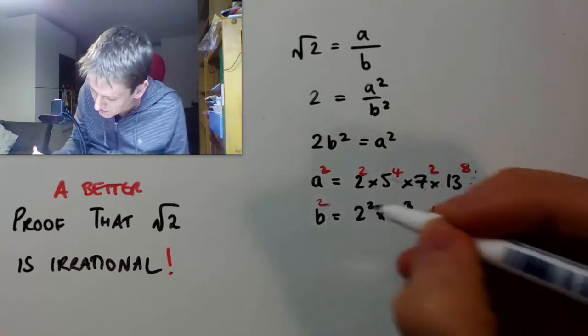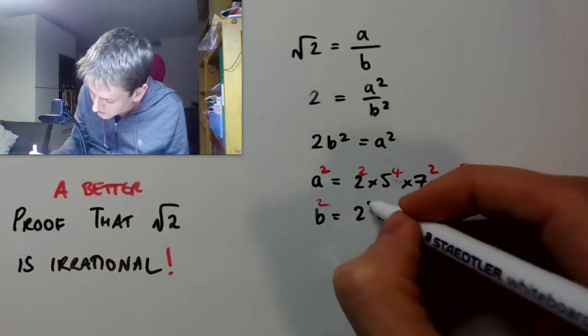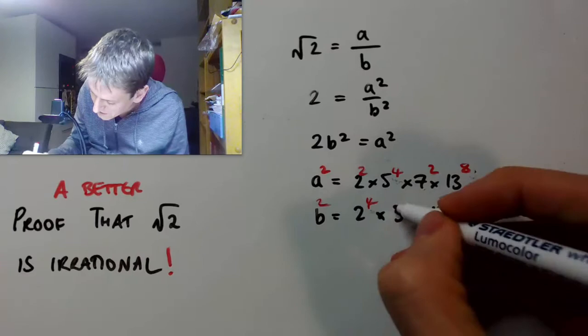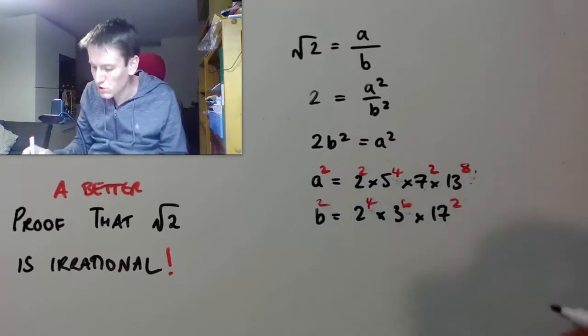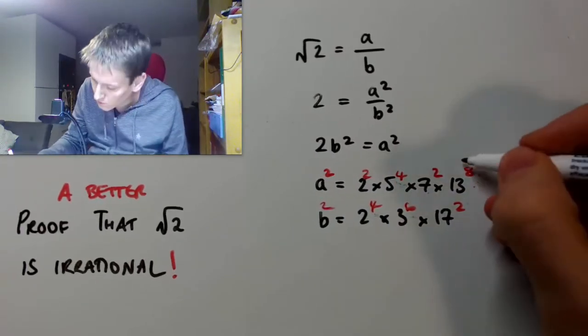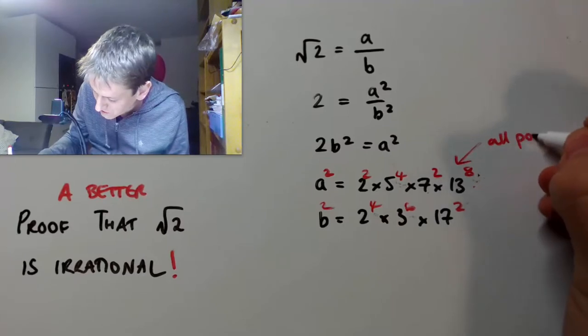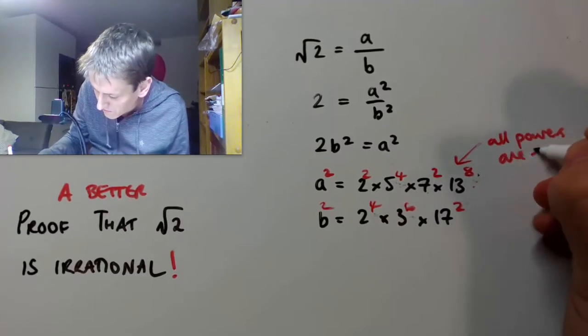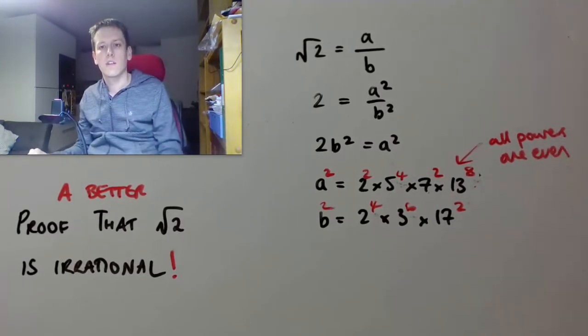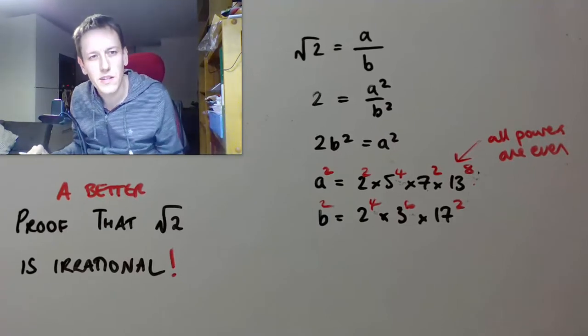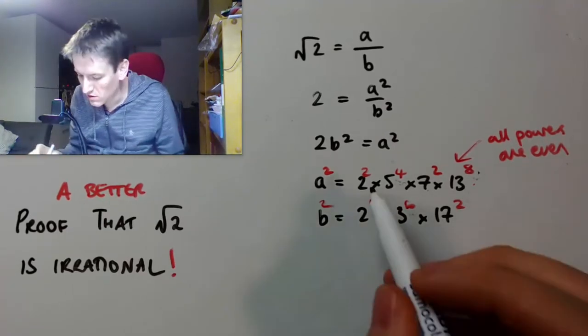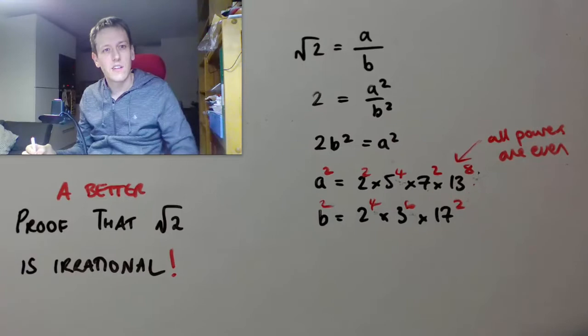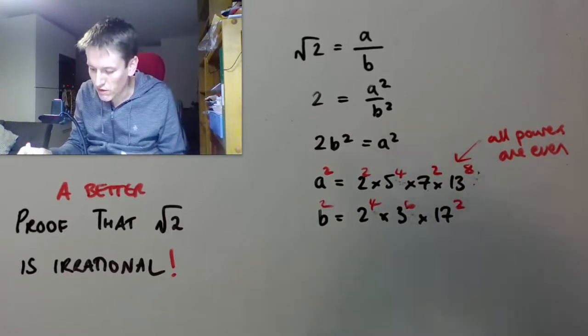And that would be the same for b. If I do b squared, this becomes a 4, this becomes a 6, and this becomes a 2. And in particular, all of these powers are going to be even. So, any square number has a prime decomposition where all of the individual primes are raised to even powers.